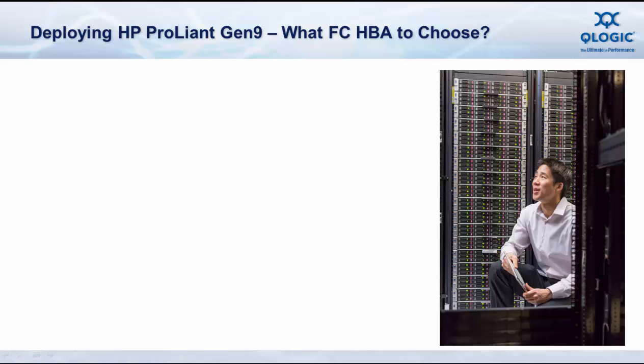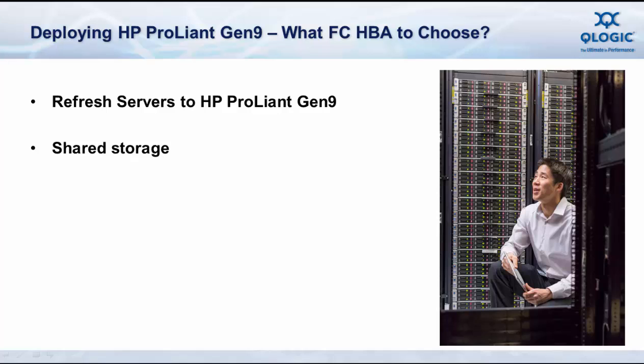You have an approved project to upgrade the data center with HP's industry-leading ProLiant Gen9 servers. The challenge is that the current budget approved only applies to the servers being upgraded, and none of the infrastructure or storage devices can be upgraded at this time. Some of the servers are connected to shared storage via a Fibre Channel SAN, and that SAN infrastructure is currently 8GB Fibre Channel switching technology.